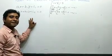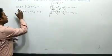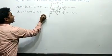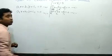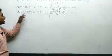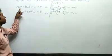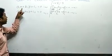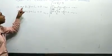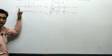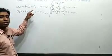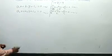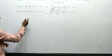Now we compare equation one and equation two. In equation one we have a₁, b₁, and in equation two we have a₂, b₂. We'll also look at the constant terms.